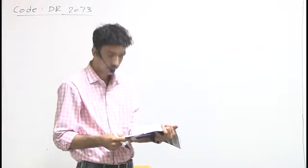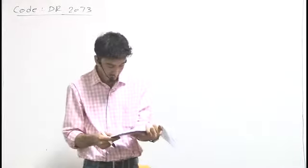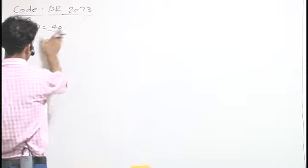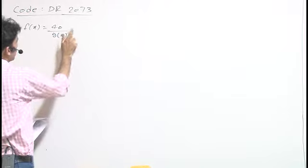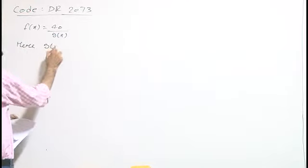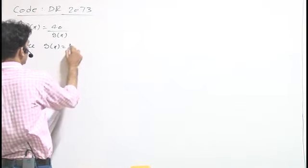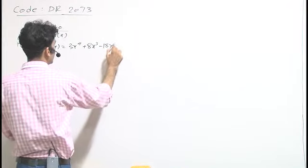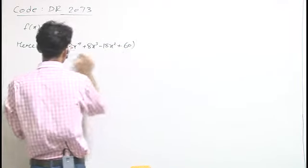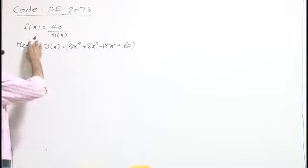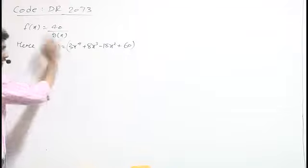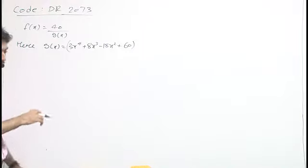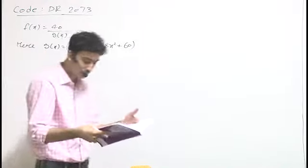This is a problem of maxima and minima. We have a function f(x) defined as f(x) = 40/g(x), where g(x) = 3x⁴ + 8x³ - 18x² + 60. We have to check which of the following options are correct — options involving extreme values at some points.